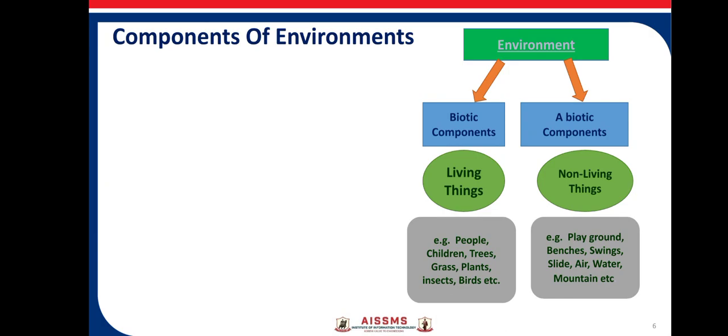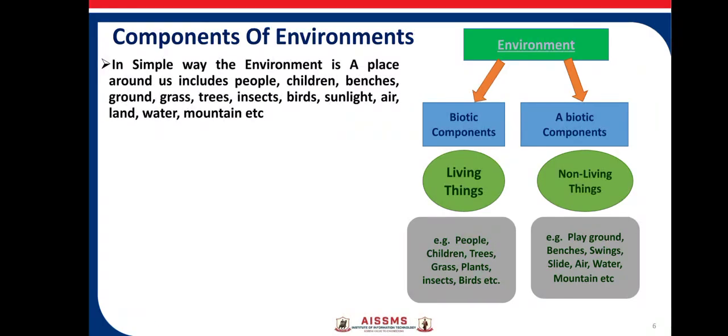Examples of biotic components are people, children, trees, grass, plants, insects, birds, etc. Examples of abiotic components are playground, benches, sinks, slide, air, water, mountain, etc. In simple terms, environment is a place around us which includes people, children, benches, grass, ground, trees, insects, birds, sunlight, air, land, water, and mountain — in short, it includes both biotic and abiotic components.